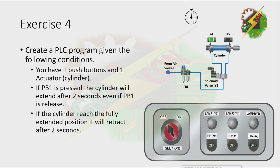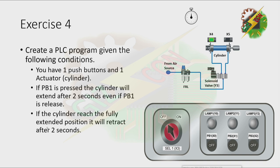Now let's have our demonstration. Let's press PB1. As you can see, I don't need to hold PB1 for 2 seconds — I just need to press it. After 2 seconds, the cylinder will automatically extend, and after it reaches its fully extended position, it will retract.